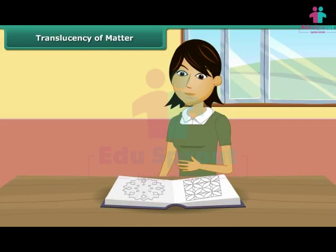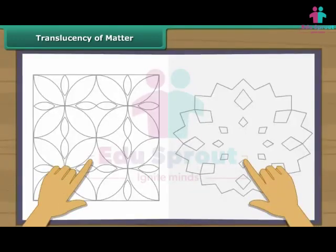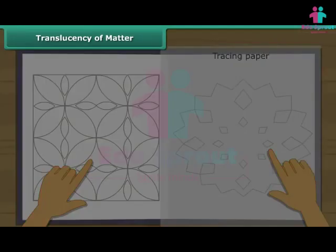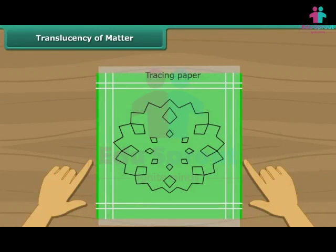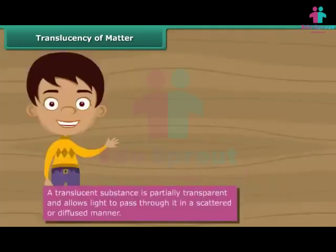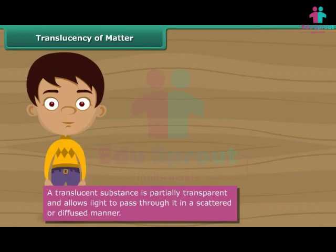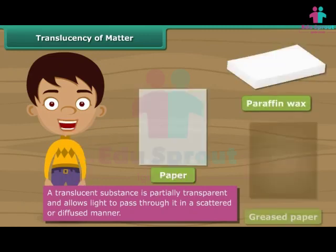Rekha is getting ready to embroider a handkerchief. She has located a pattern in a book and wants the same on her handkerchief. She uses a tracing paper to copy the pattern from the book onto her hanky, and she is all set to embroider. What made this possible was the translucent tracing paper. A translucent substance has the characteristics of both transparent and opaque substances — it absorbs some light and reflects back the rest, transmitting the absorbed light in a scattered or diffused manner. Other examples of translucent substances are paper, paraffin wax, and greased paper.